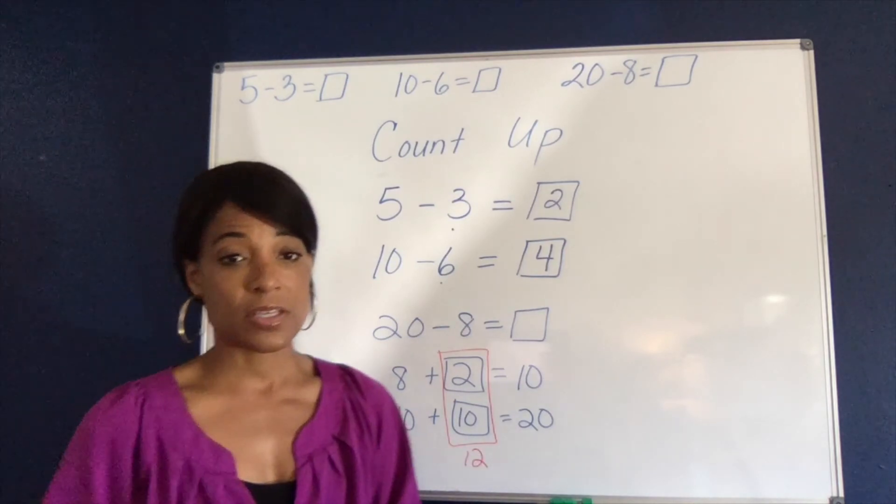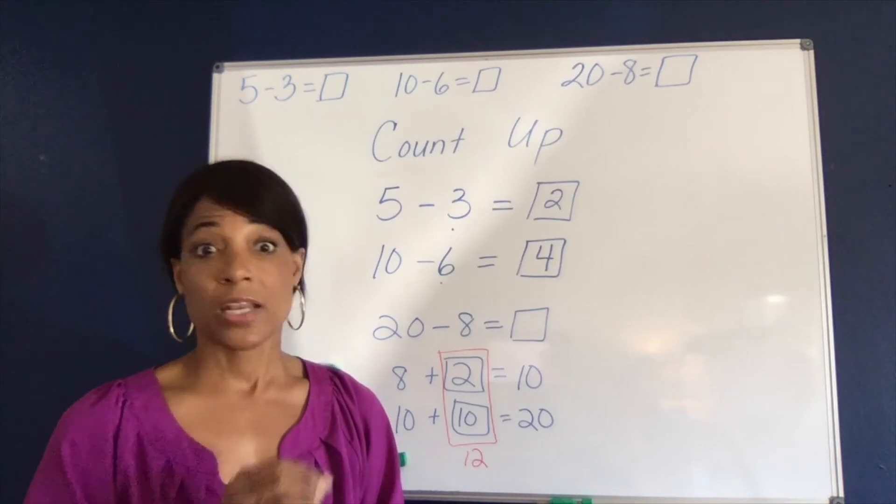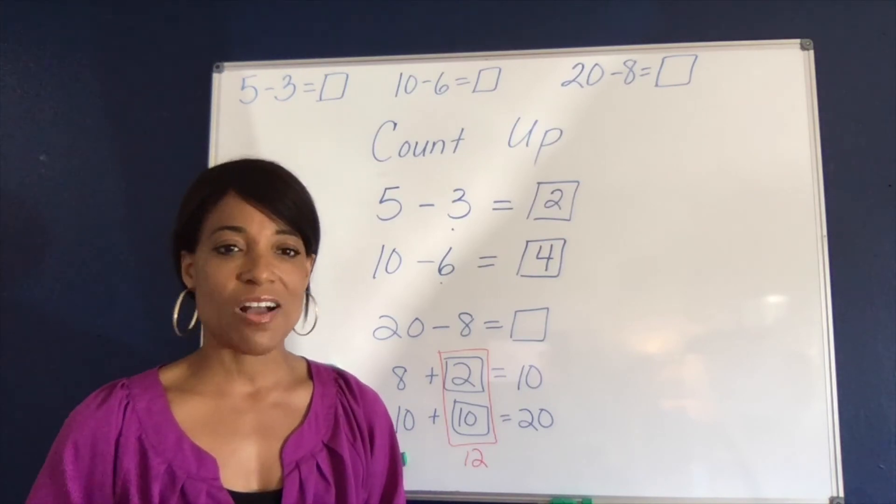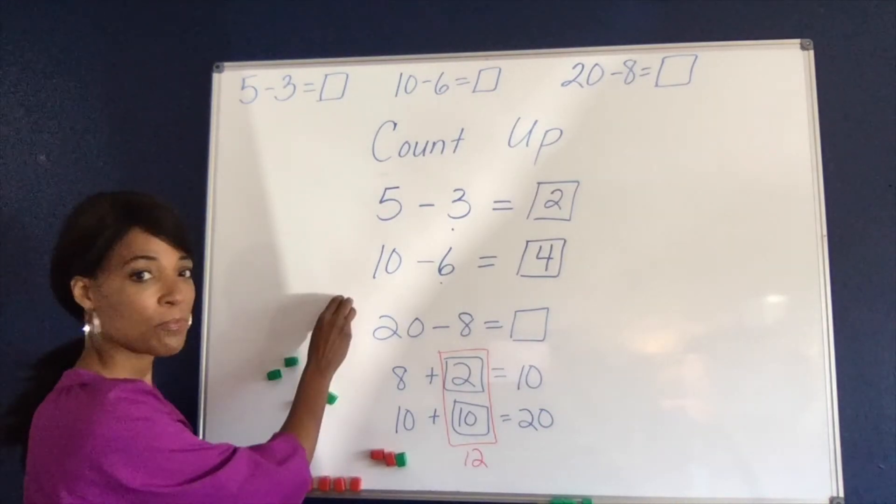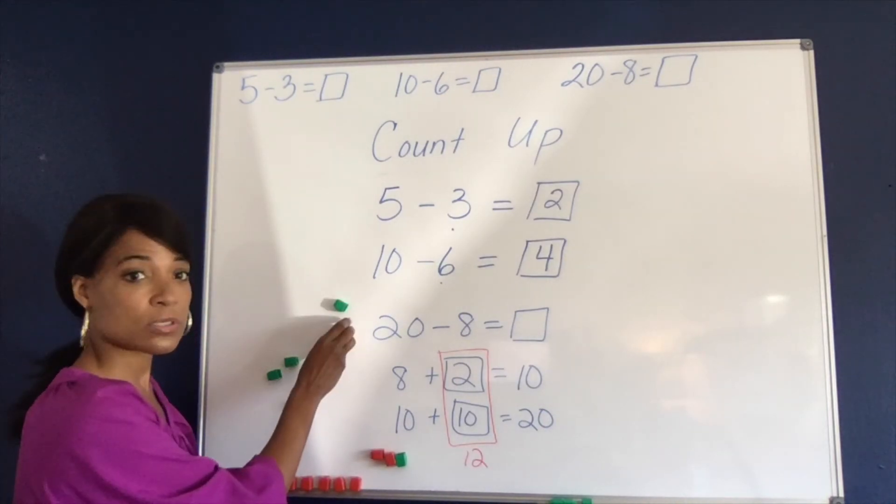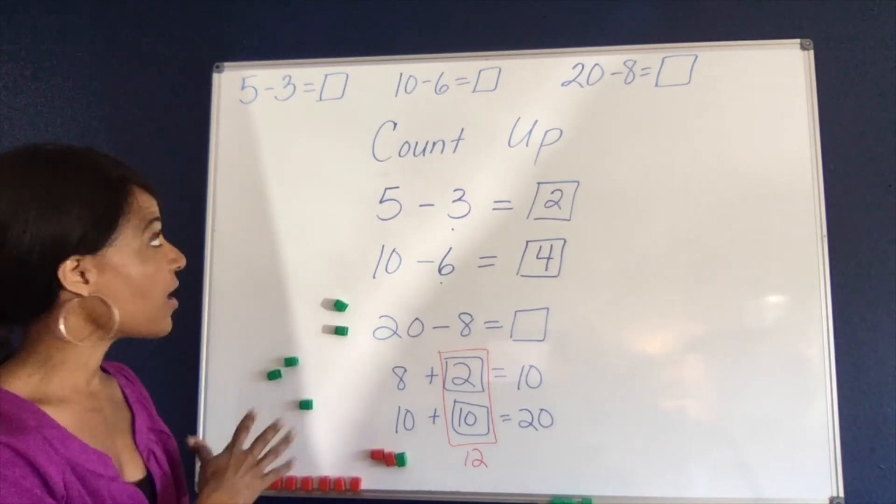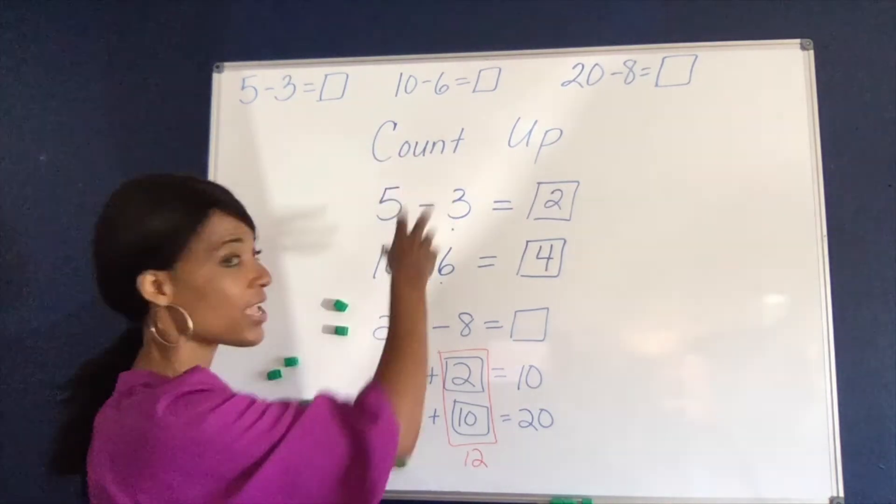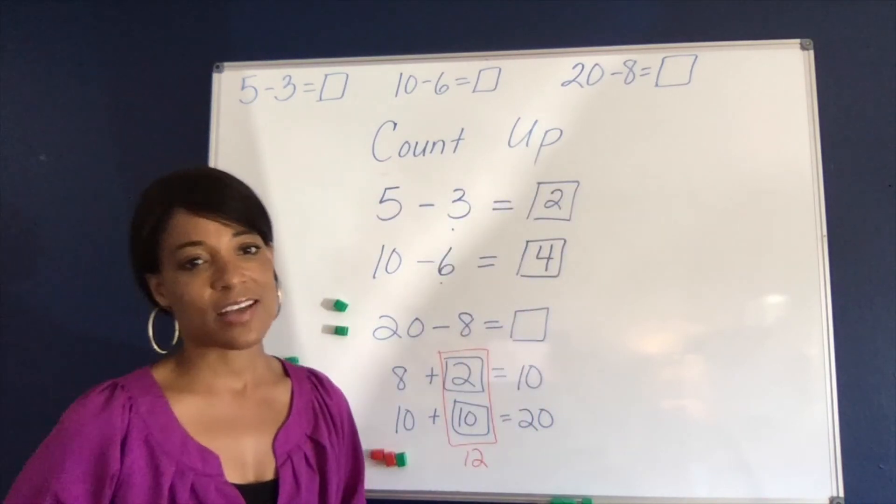Now some students might do this on their fingers. Some students might do this in their head. But in order to do this, we're going to need a strong sense of number. And that comes from having exposure and multiple opportunities with tools, building automaticity and muscle memory to 5, muscle memory to 10, and then that makes it so much more efficient and easier to work with facts to 20.